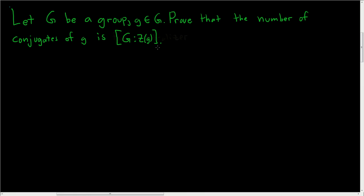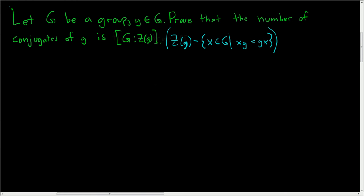So there's a lot going on here. First of all, what is the centralizer? The centralizer of g is the set of all elements x in our group that actually commute with g. The centralizer of an element is very different from the center of a group — the center of a group is the set of all elements that commute with everything, whereas this is just the set of all elements that commute with g.